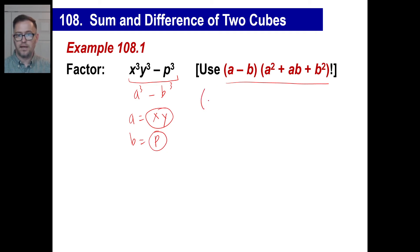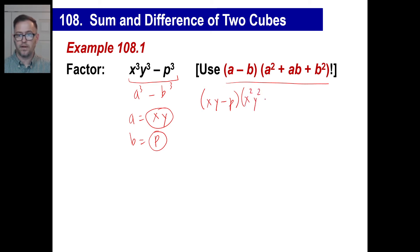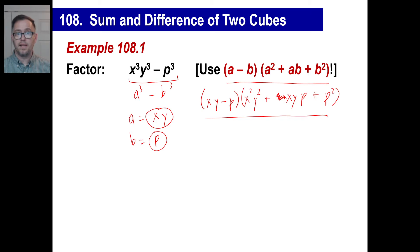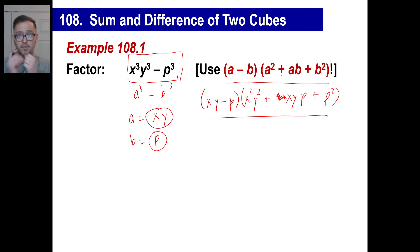So we can write this as (a - b), which is (xy - p). Then a squared is just x²y². Plus a times b, which is xy times p. Plus b squared, which gives you p squared. All you need to do is memorize the factoring formula and break the expression up so you can identify a and b, then plug them into the correct spots.